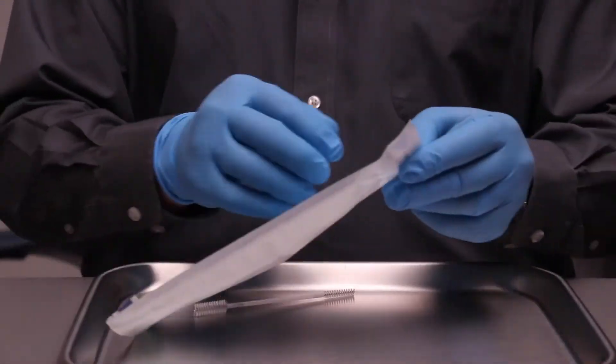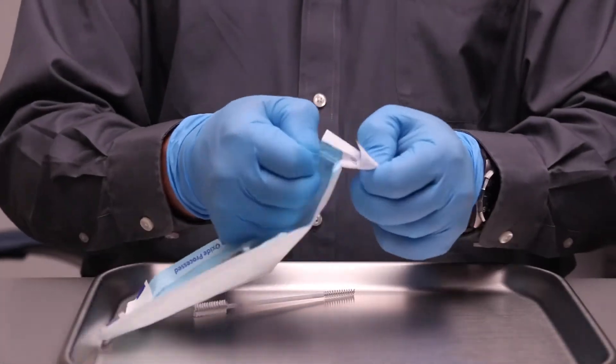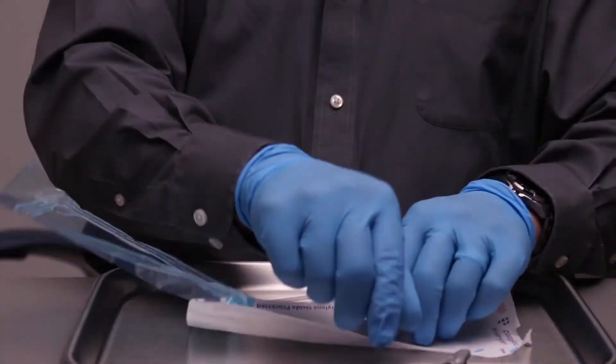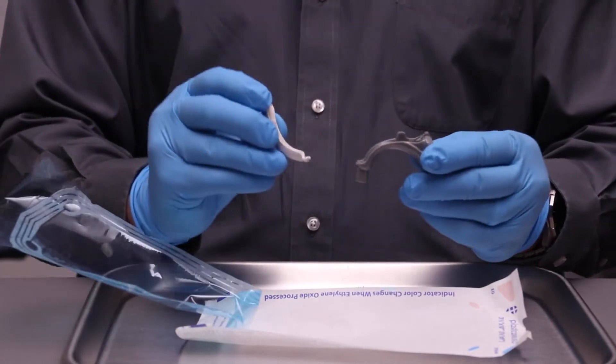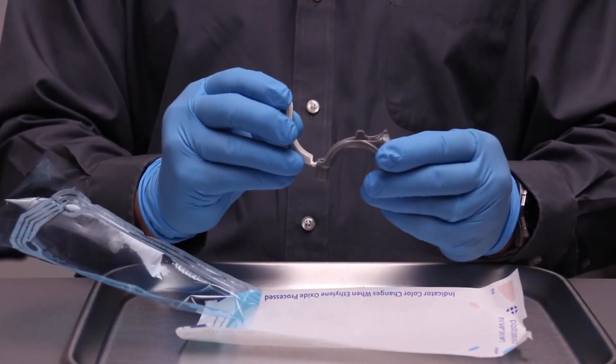Take it out of the autoclave bag and holding the bottom of the adapter, take the upper half, hook it onto the base, align it, and then press it down and click.